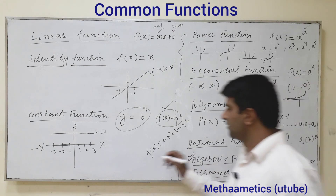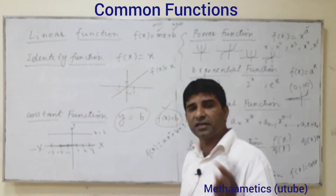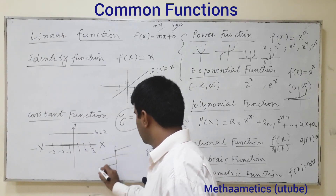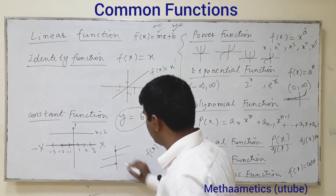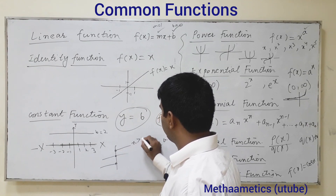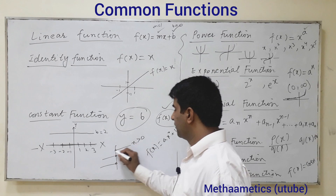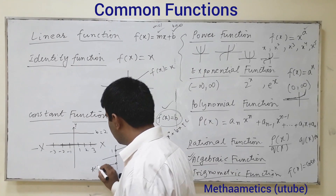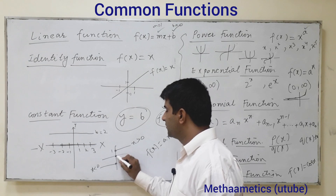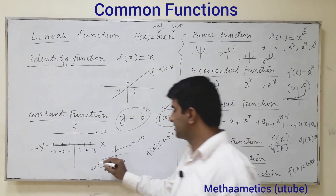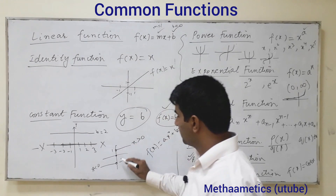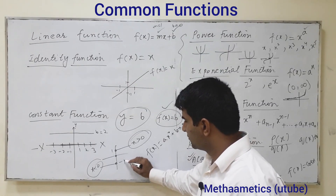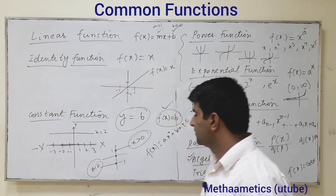The sign function (signum function) outputs a positive value, negative value, or 0. When x is greater than 0 we get a positive value of 1; when x is less than 0 we get a negative value of minus 1; and when x equals 0 we get 0. This is known as the sign function.